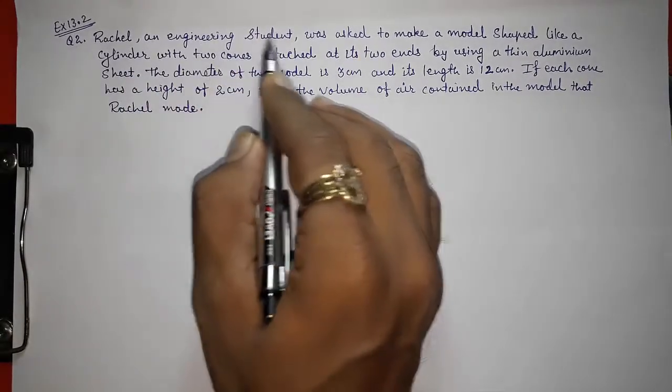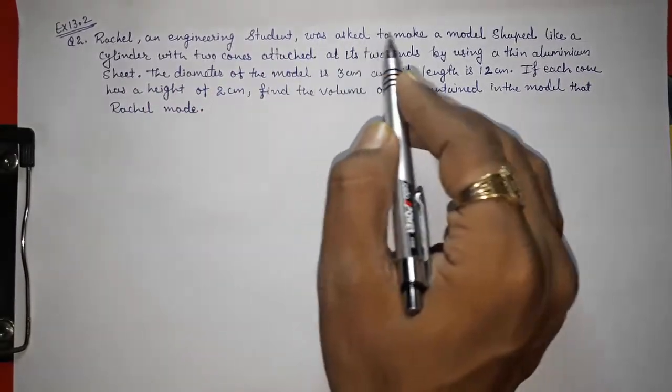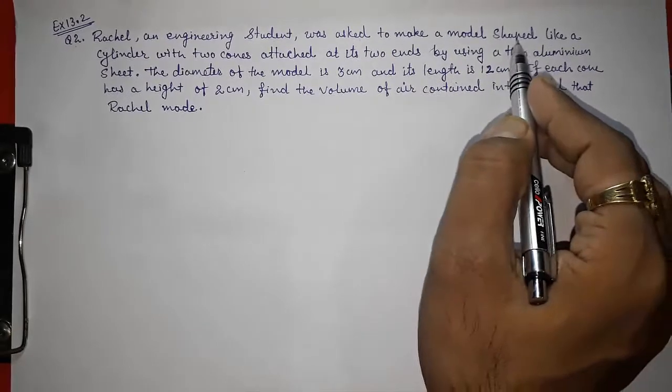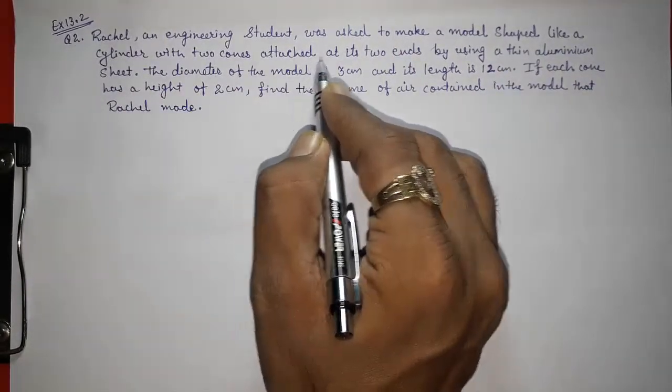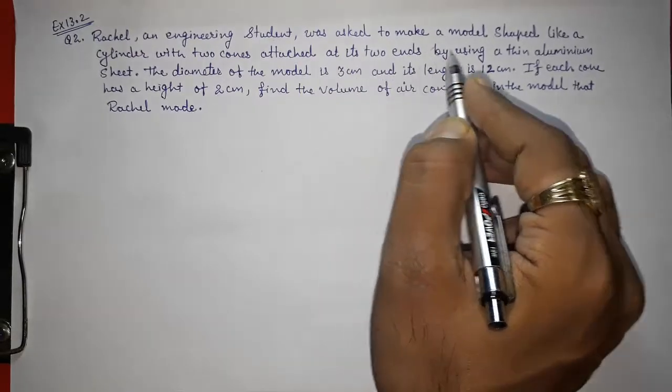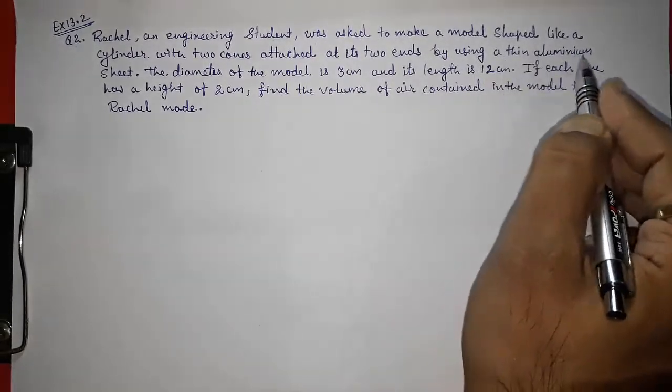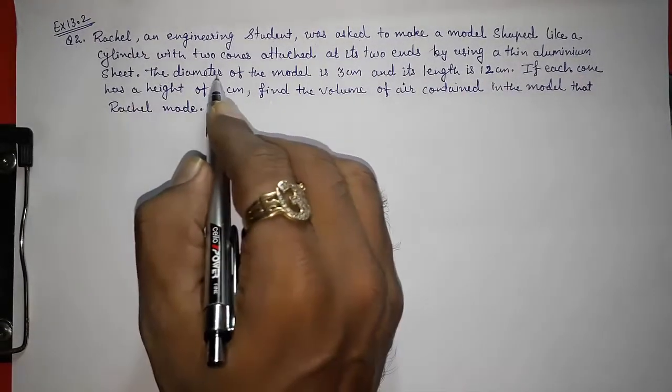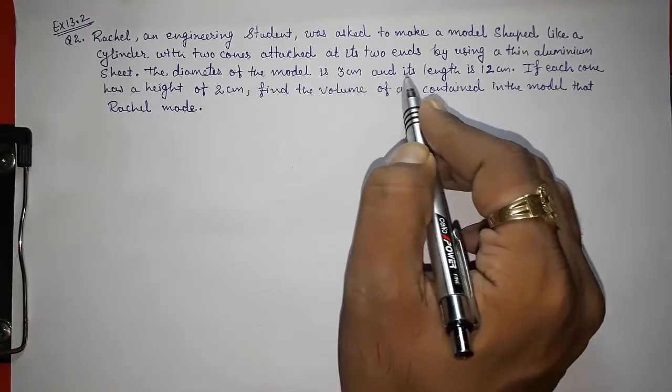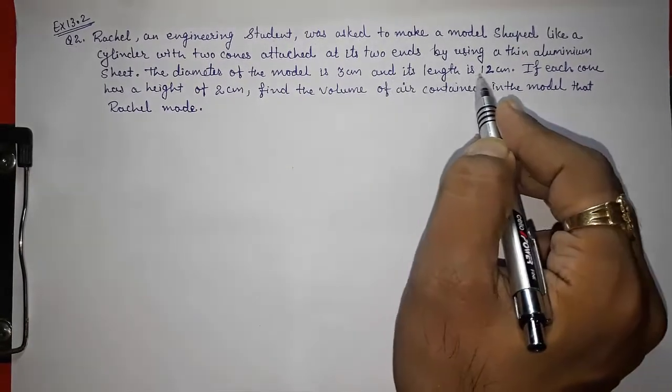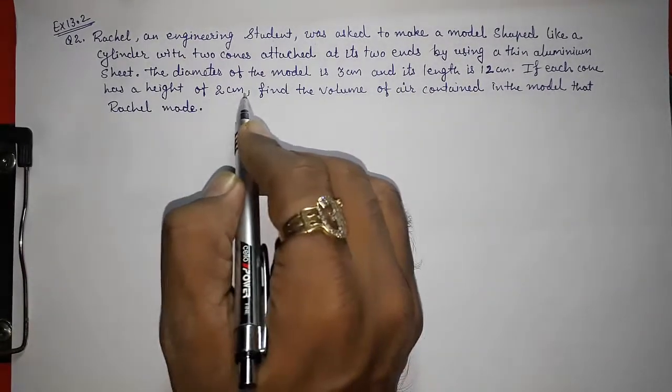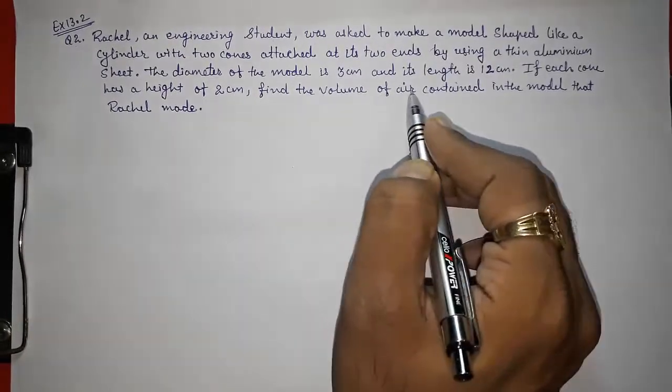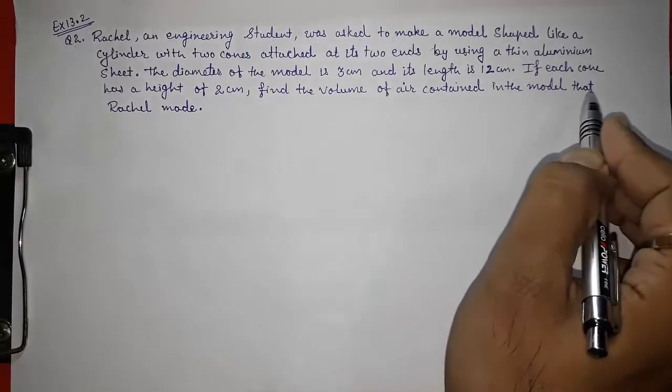Russell, an engineering student, was asked to make a model shaped like a cylinder with two cones attached at its two ends by using a thin aluminum sheet. The diameter of the model is 3 cm and its length is 12 cm. If each cone has a height of 2 cm, find the volume of air contained in that model.